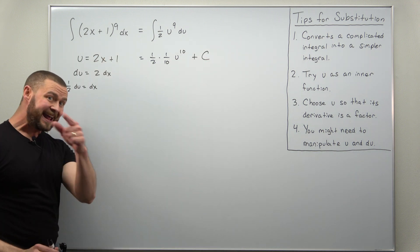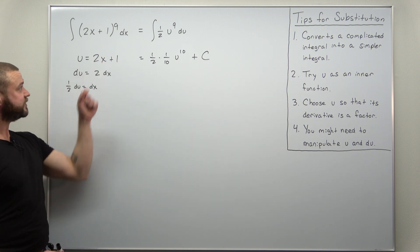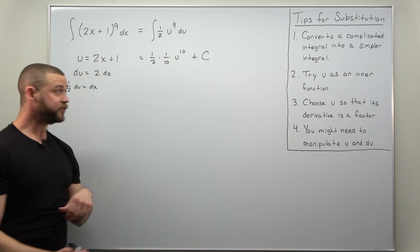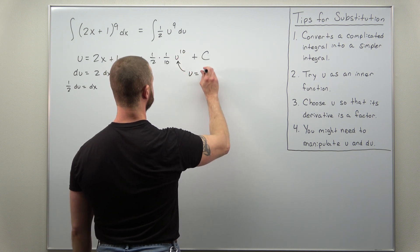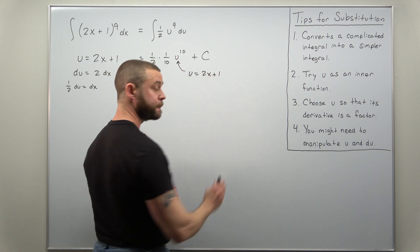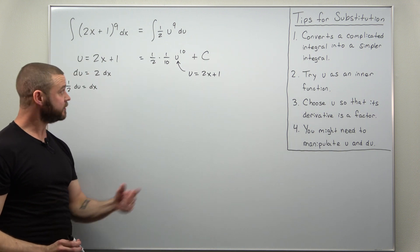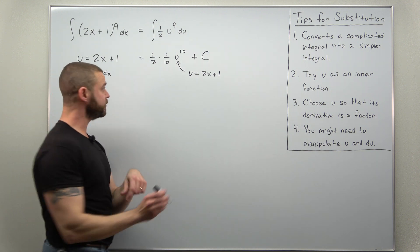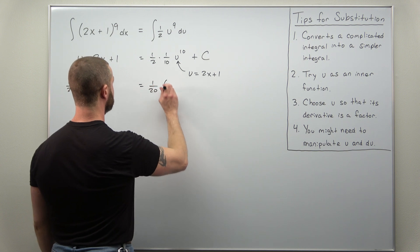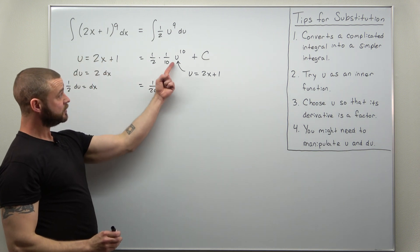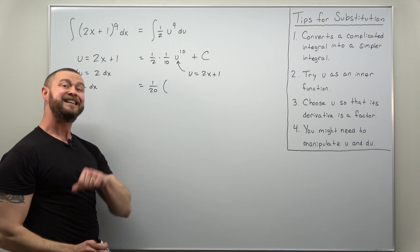And to get an antiderivative back in terms of x, we're just going to substitute u here as 2x plus 1. So we just plug back in and we get our antiderivative. We'll write those fractions as 1 over 20 times 2x plus 1 to the 10th power.